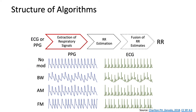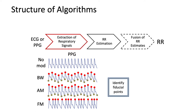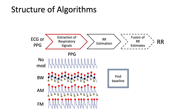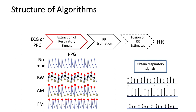Algorithms to estimate respiratory rate typically consist of the following steps. Firstly, extraction of respiratory signals. The diagram below shows PPG and ECG signals. On the top row are the ideal signals, and then on the three rows below are the signals modulated by different effects of breathing: baseline wander, amplitude modulation, and frequency modulation. Taking the optical PPG signal as an example, we can firstly identify fiducial points such as peaks and troughs. Secondly, take measurements from these such as the baseline, the amplitude, or the beat-to-beat intervals. And thirdly, use these to obtain respiratory signals, which ideally would exhibit a peak per breath.